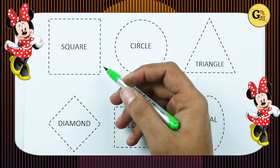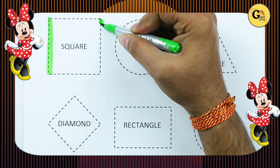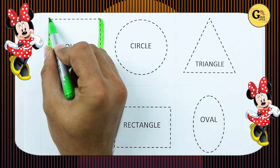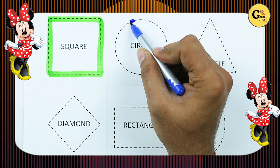It's square. One line, two line, three line, four line, two slipping line, two standing line. It's called square with green color.